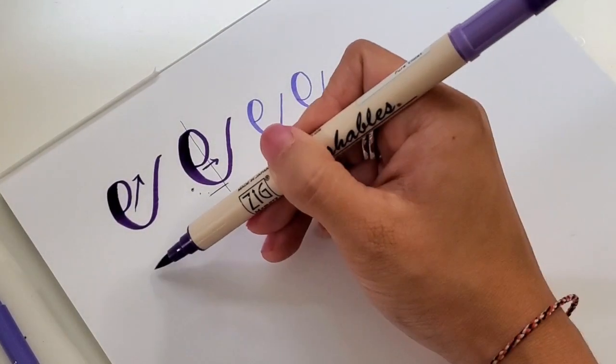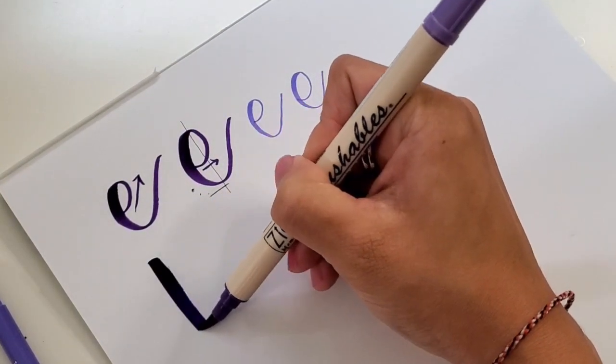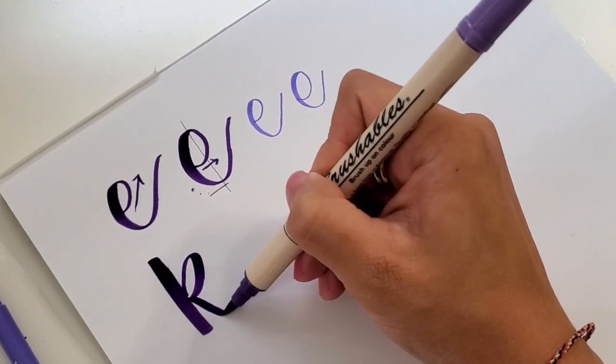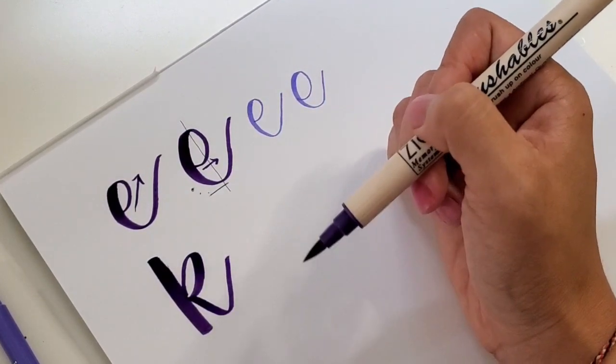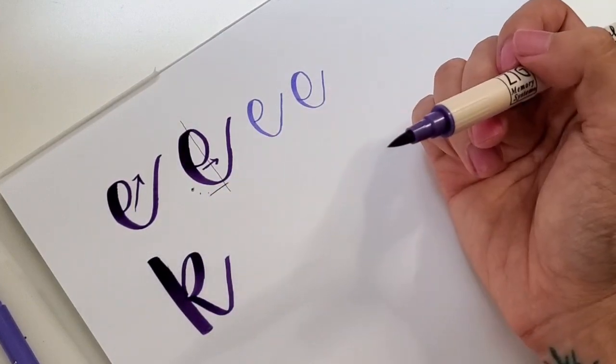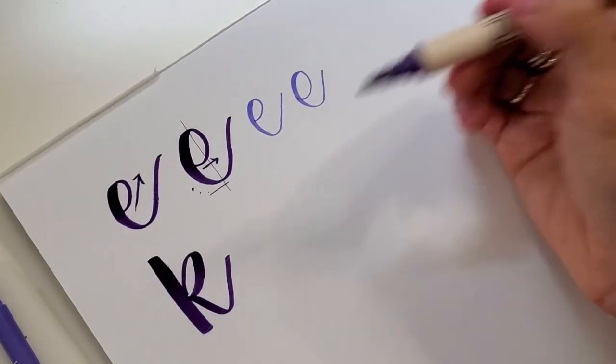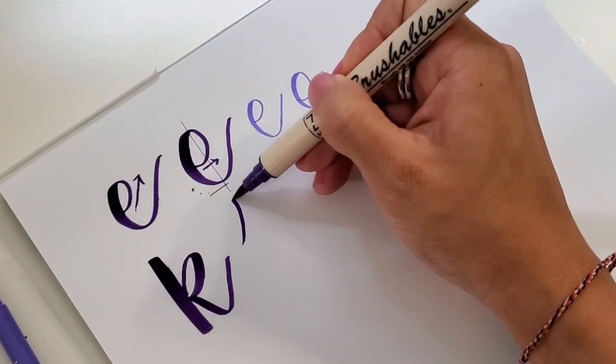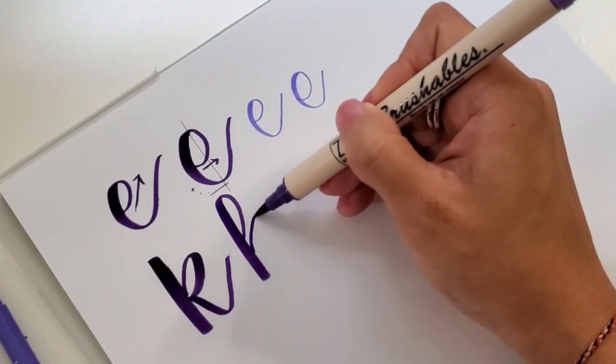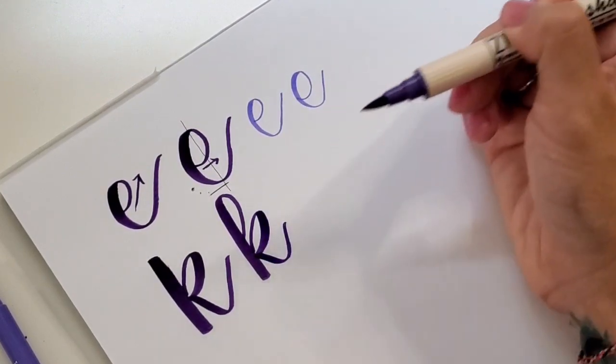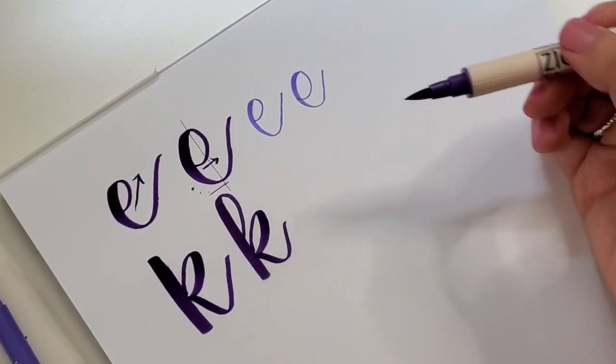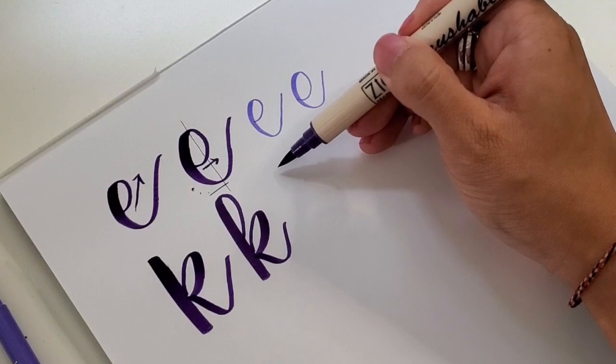Notice how I'm picking up my pen every single stroke. It looks like a weird R, right? So there's variations of this with the ascending loop. I just never really liked those.